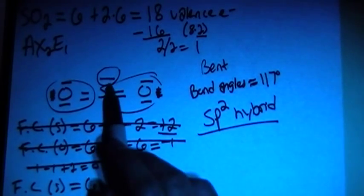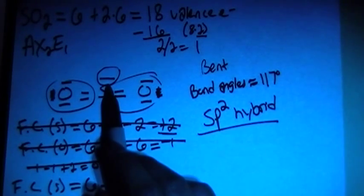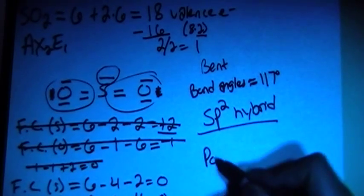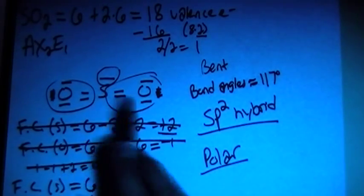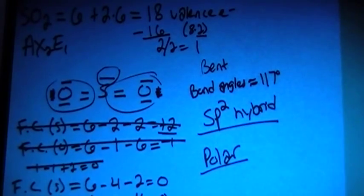And because of this lone pair of electrons up top here, it's going to make this a polar molecule, because these oxygens cannot cancel out the net dipole moment from that pair of electrons on top there.